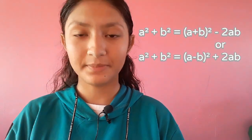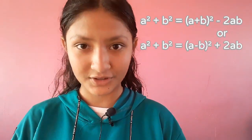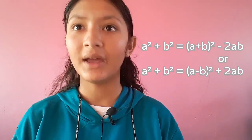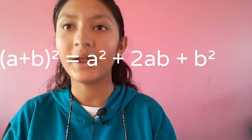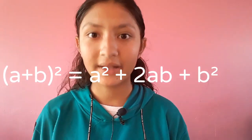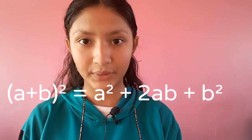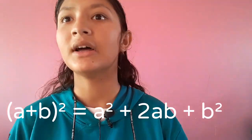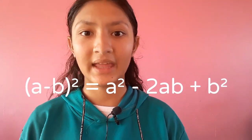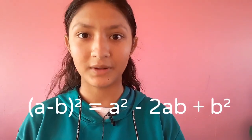Number one is a square minus b square equals to a plus b into a minus b. Second one, a square plus b square equals to a plus b whole square minus 2ab. The third one, a plus b whole square equals to a square plus 2ab plus b square. And the last one, a minus b whole square equals to a square minus 2ab plus b square.